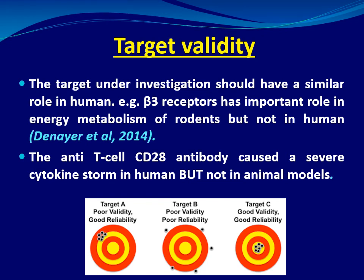Target validity is another important nominal validation: the target under investigation should have a similar role in humans. For example, beta-3 receptors are important in rodents for energy metabolism but not in humans. Similarly, anti-T-cell CD28 antibodies caused severe cytokine storm in humans but not in animal models — illustrating why target validity is essential.